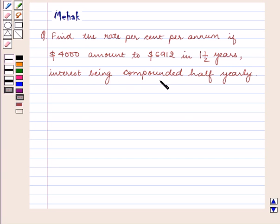interest being compounded half yearly. We know that the compound interest formula is amount A equals P into 1 plus R upon 100 raised to power n.